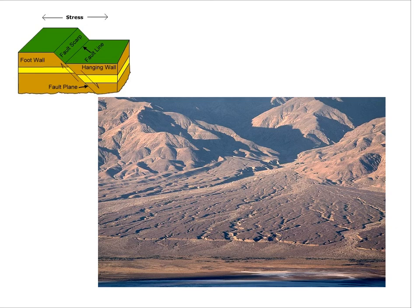The fault scarp is the vertical throw — the landscape feature with a vertical component — created by slip on a dipping fault. In this case we have our fault; the fault trace is right here, and this steeply sloping section is the scarp. We have a normal fault here.